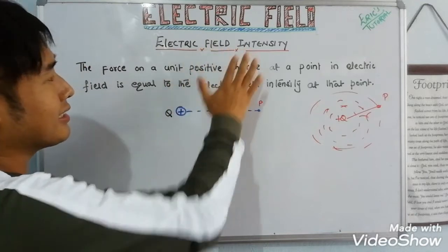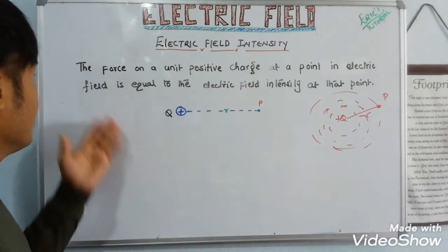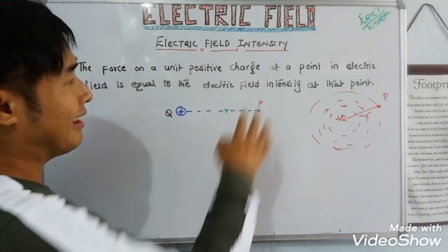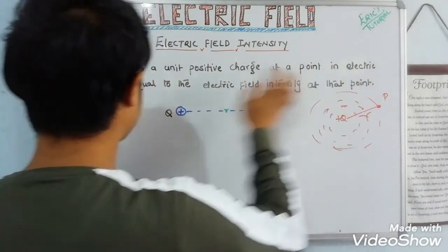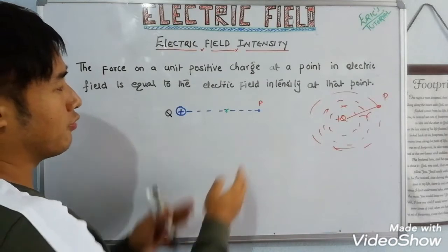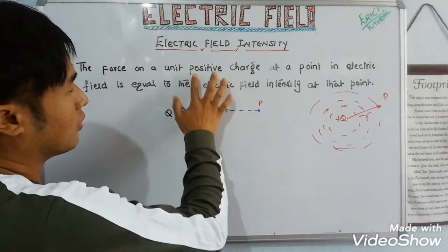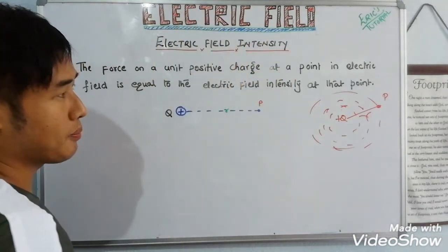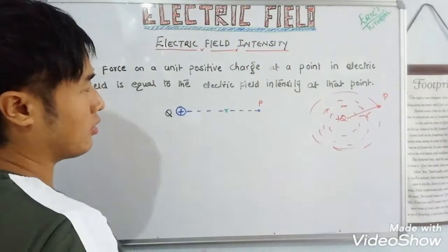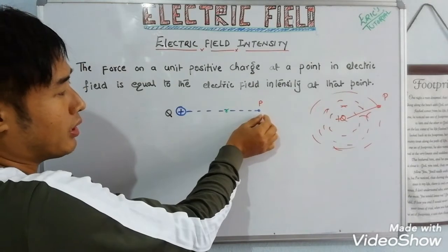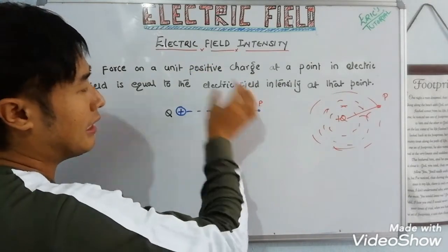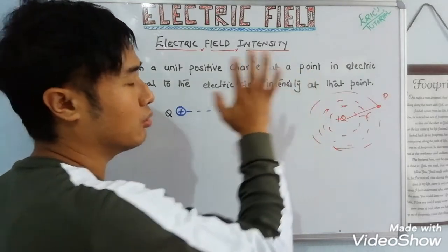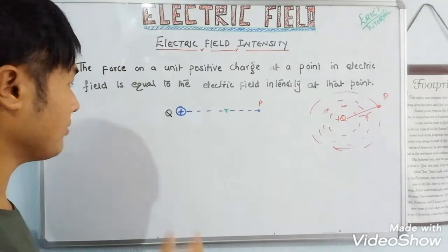The definition of electric field intensity: the force on a unit positive charge at a point in an electric field is equal to the electric field intensity. So the force experienced by a unit positive test charge at that point defines the electric field intensity.